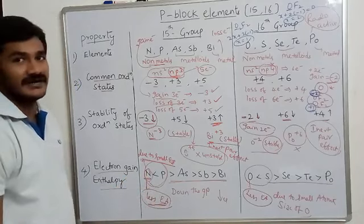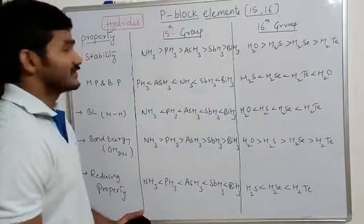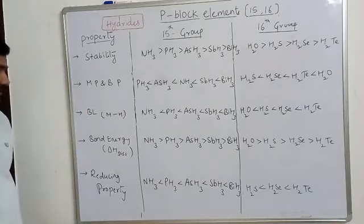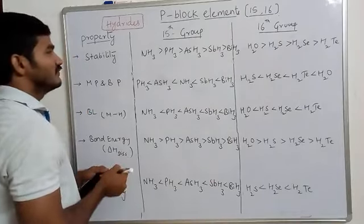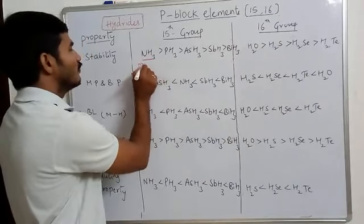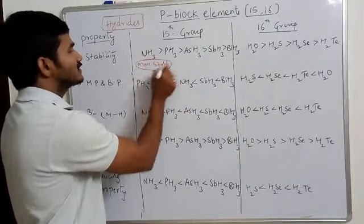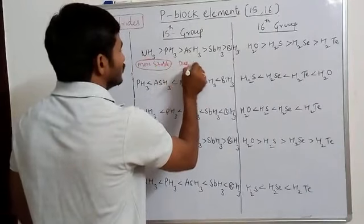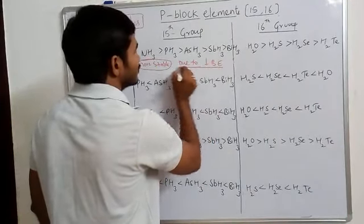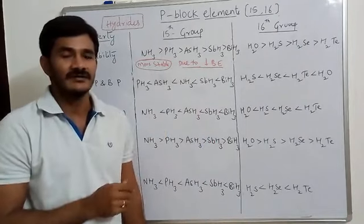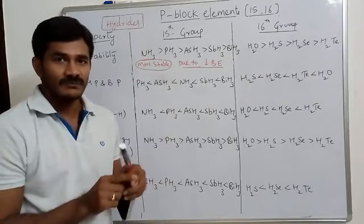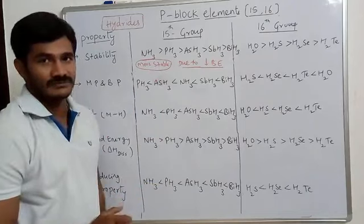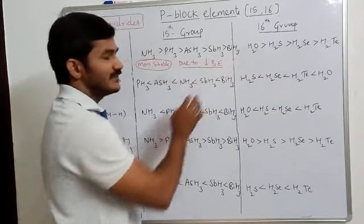Now let's discuss hydride trends. We'll cover stability, melting point, boiling point, bond length, bond energy, and reducing property. Among Group 15 hydrides, ammonia is the most stable. Stability order decreases down the group due to decreasing bond energy — as atomic size increases, bond length increases and bond energy decreases.